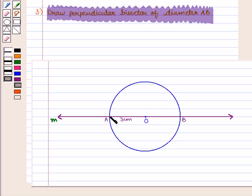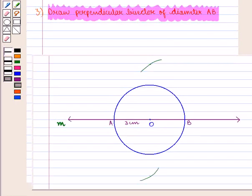For this, we keep the compass at center A and open it to a length more than half of AB. We draw two arcs equidistant from line segment AB.